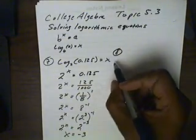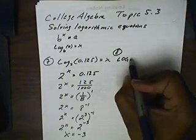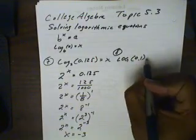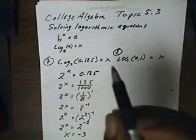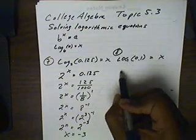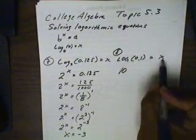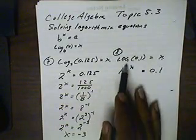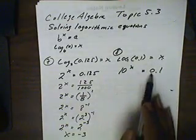Alright. We have the common log of 0.1 and that equals x. Well, common log basically means we're using base 10. So a base 10 as an exponential with x here equals 0.1. We just converted our logarithm into exponential.